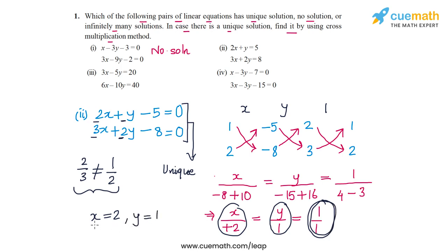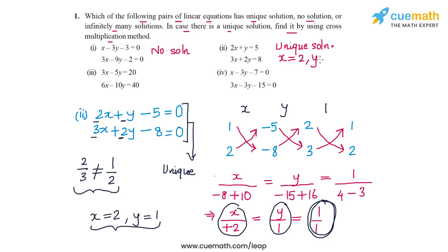So the solution to this pair is x equal to 2 and y equal to 1. This pair has a unique solution: x equal to 2 and y equal to 1.